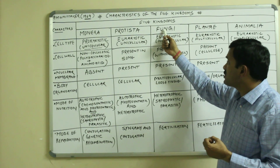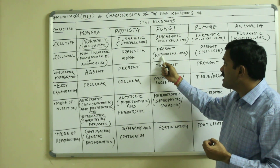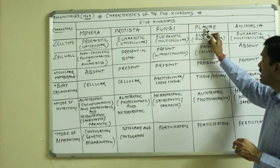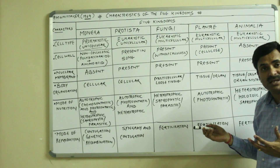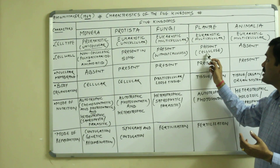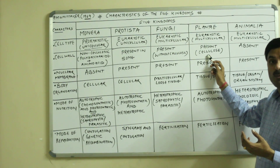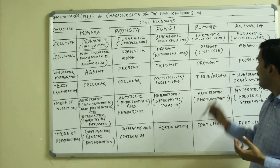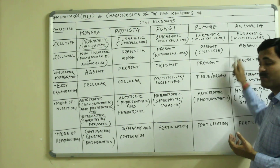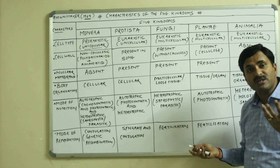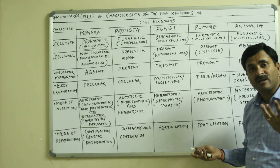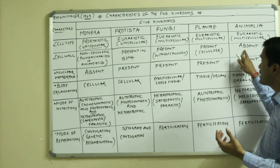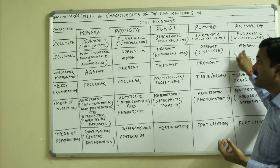In Fungi the cell wall is present but it is without cellulose. In Plantae, all plants have a cell wall made up of cellulose, which is a polysaccharide. In Animalia the cell wall is totally absent, because the key difference between plant cells and animal cells is that plant cells have a cell wall made up of cellulose while animal cells do not.